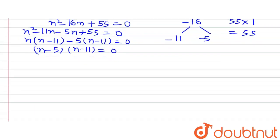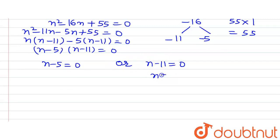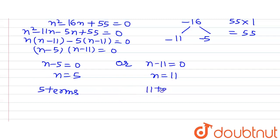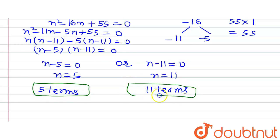Two situations are possible: either n minus 5 equals 0, or n minus 11 equals 0. So n equals 5 or n equals 11. This means that either 5 terms or 11 terms of the AP are going to give us the sum of minus 55, and this is what we were asked in the question to find out.